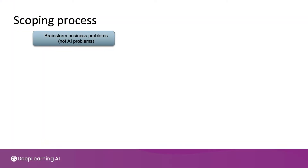When brainstorming projects, the first thing I do is usually get together with a business or product owner — often not an AI person, but someone that understands a business or an application — and brainstorm with them what are their business or application problems. At this stage, I'm trying to identify a business problem, not an AI problem.